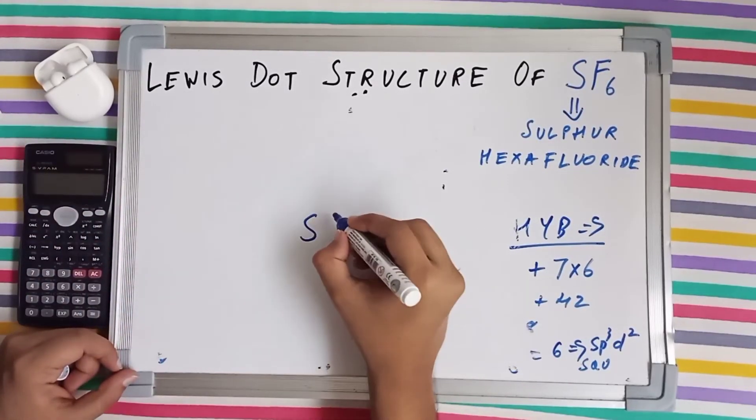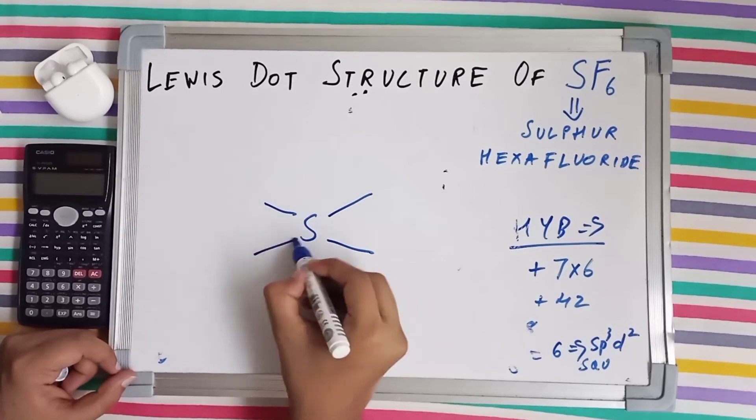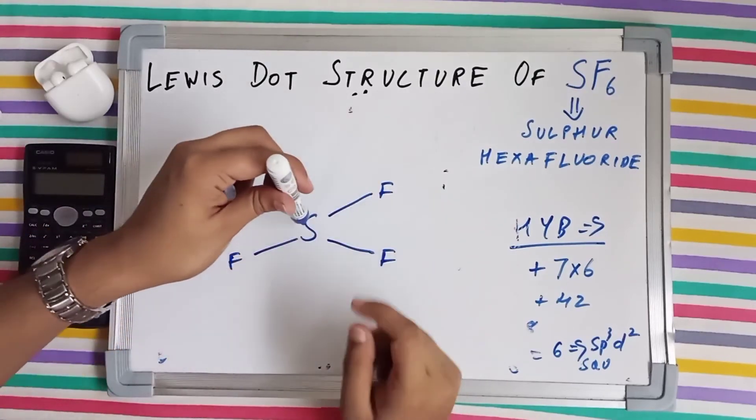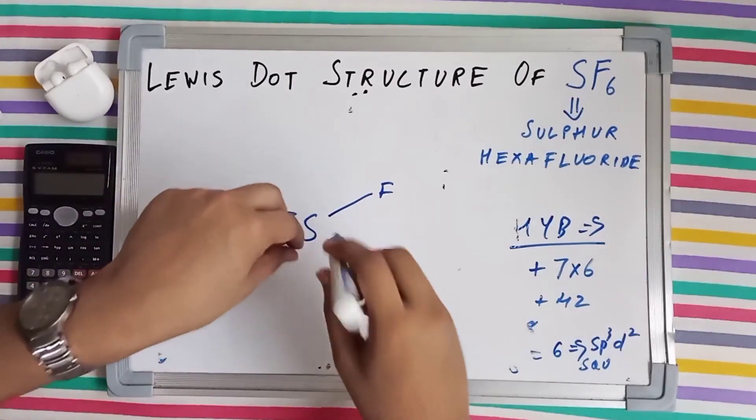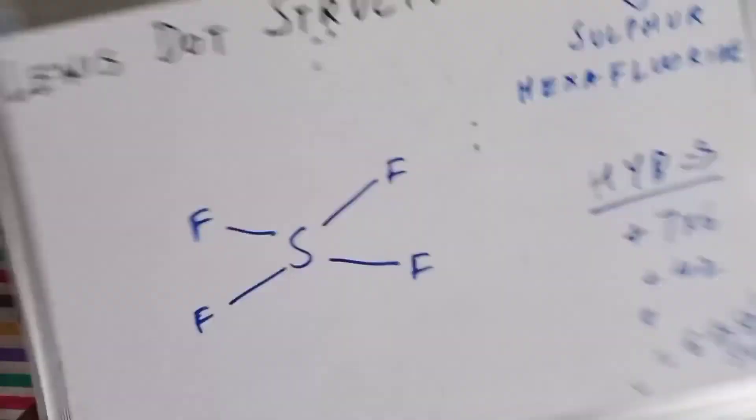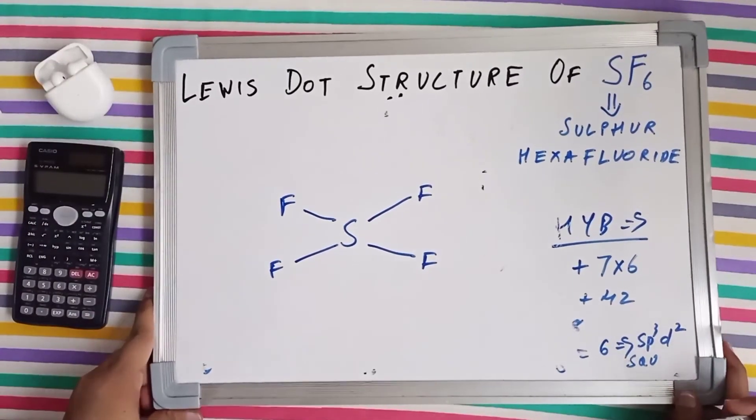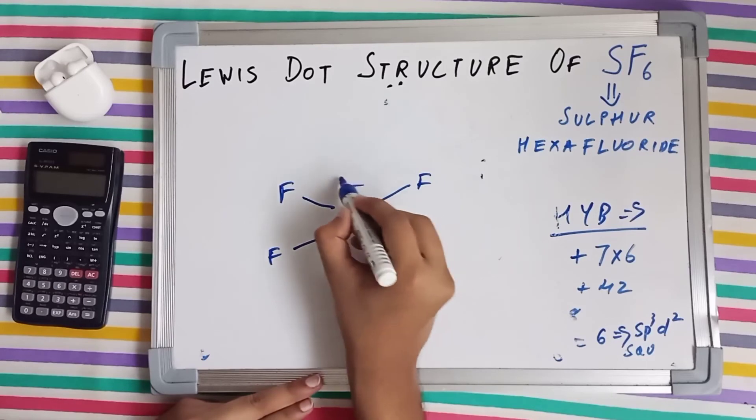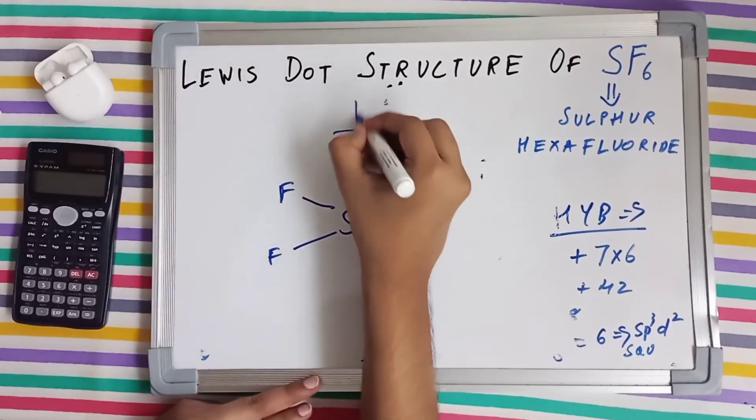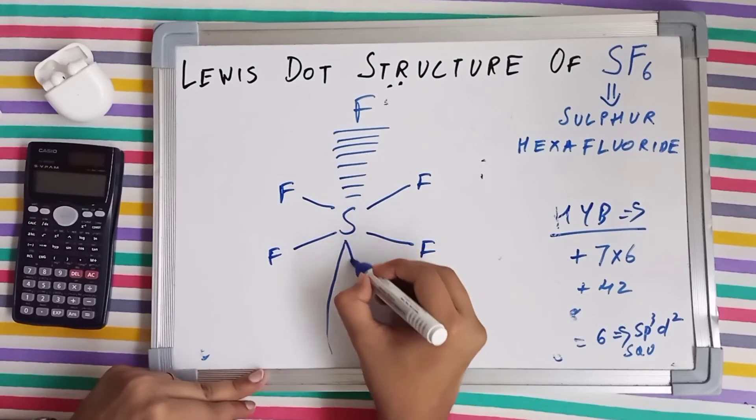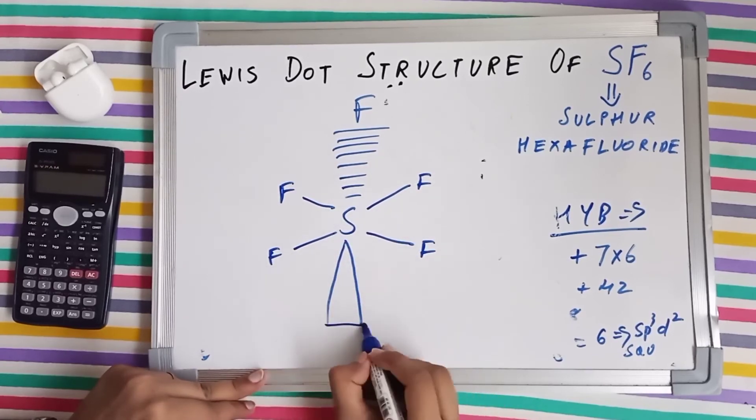See here we have a sulfur. It makes four bonds in a plane in a square, fluorine, fluorine, fluorine and fluorine. This is in a plane and above this, there is another fluorine and below the sulfur, there is also a fluorine. One is above, let me draw it with a dash, and one is below the plane of this board. So I'll draw it like this, fluorine.